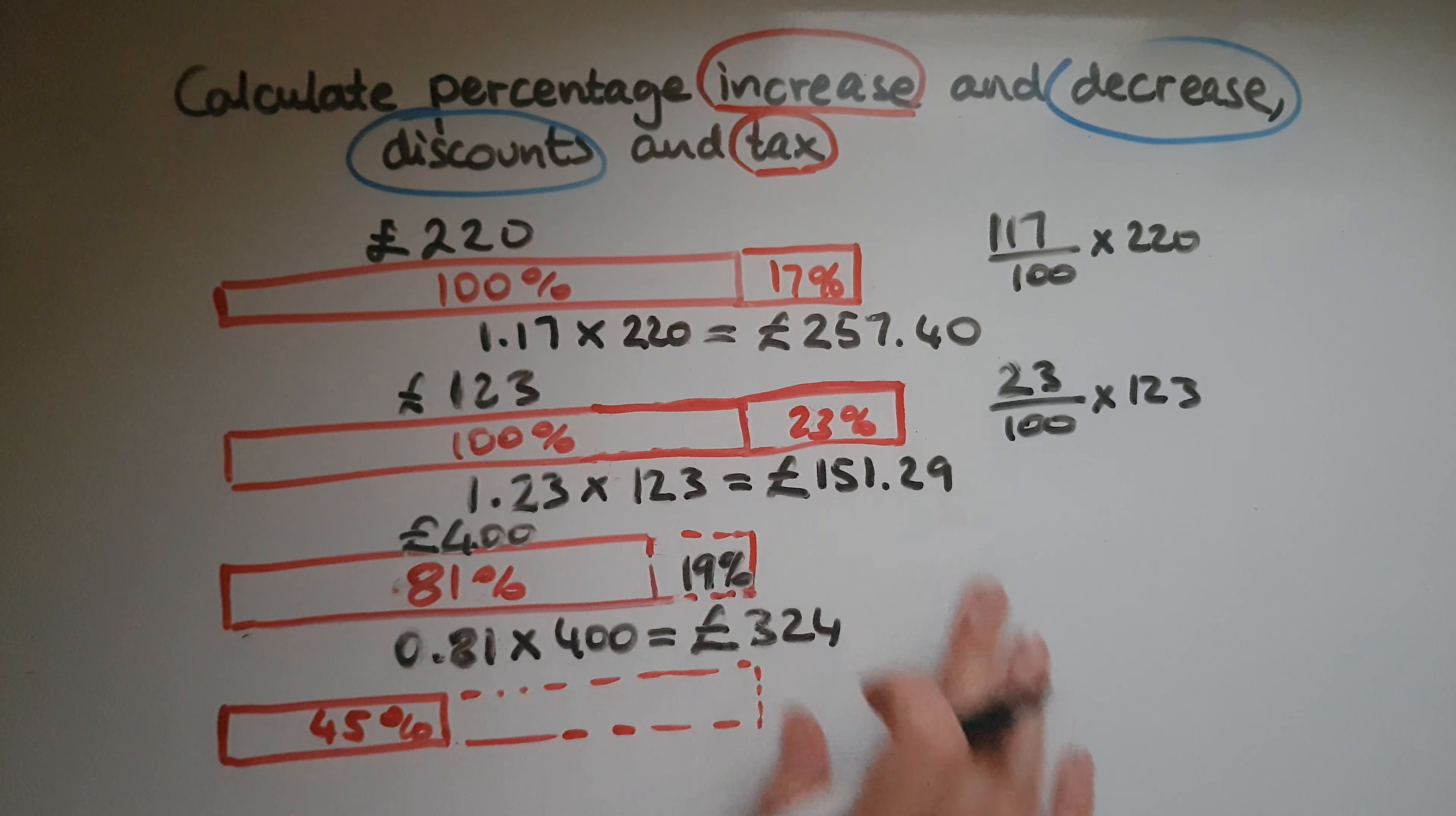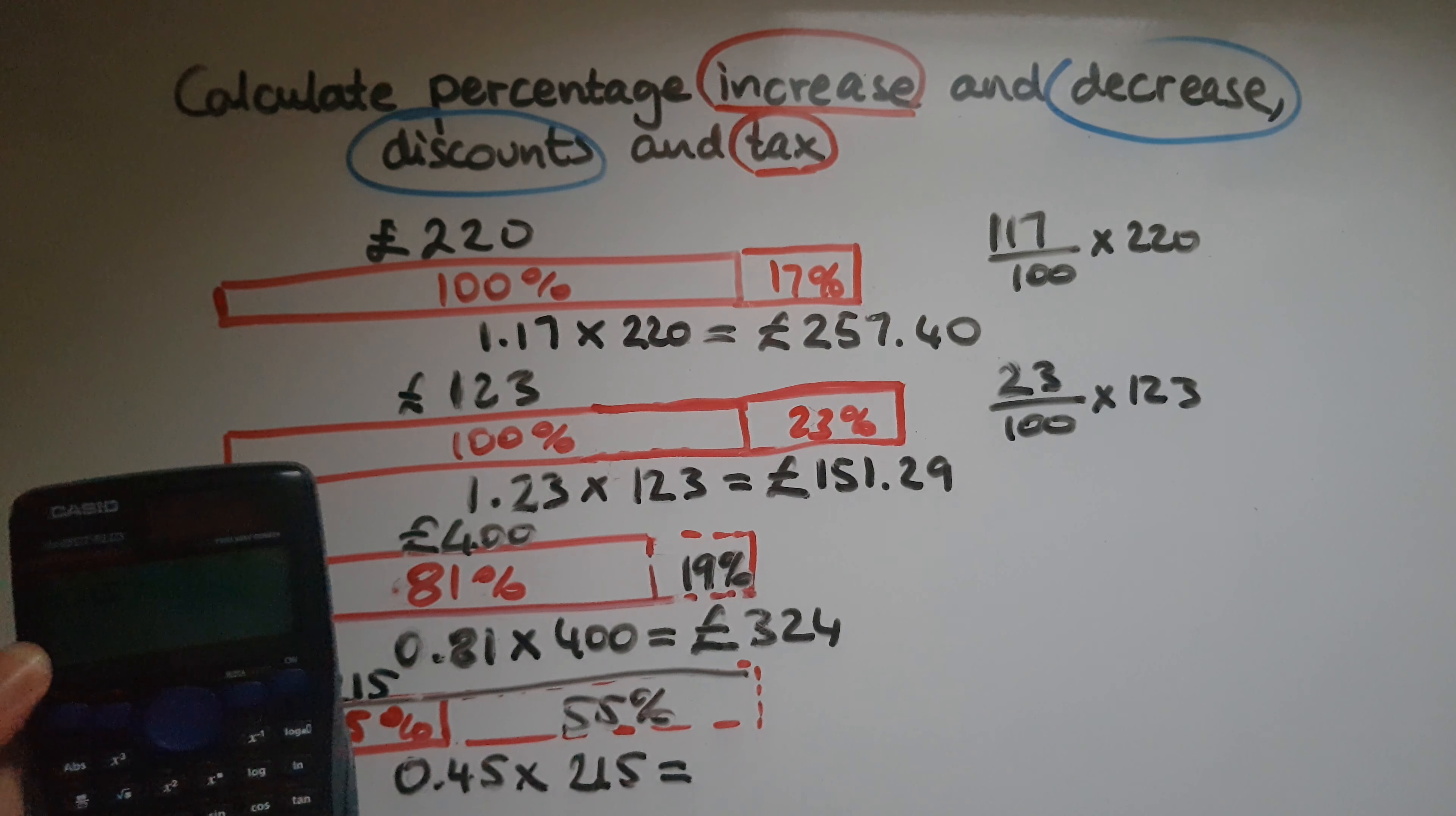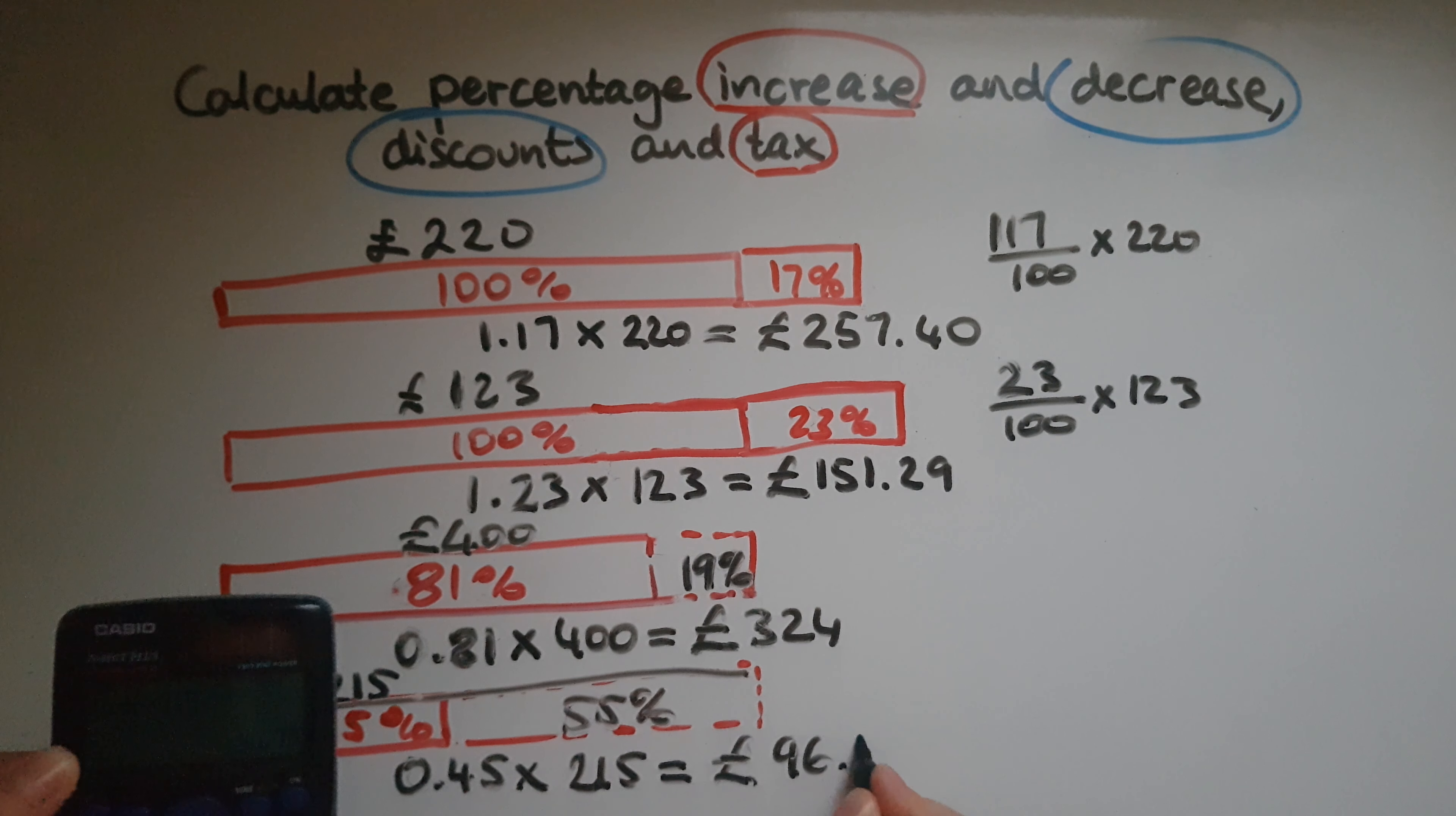And same thing with discounts. So discount means a reduction in price. If we had an original price being £215, so all of this being 215, there's been a reduction or a discount by 55%. So I can work out 55% of this and take it away from 215, or I can just work out 45% and that's it. So I'll choose the easy version. So 0.45, which is 45% written as a decimal, multiplied by 215, which is the 100% amount, and that gives me £96.75.